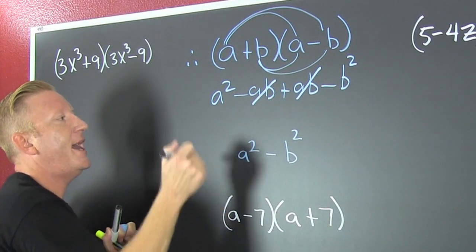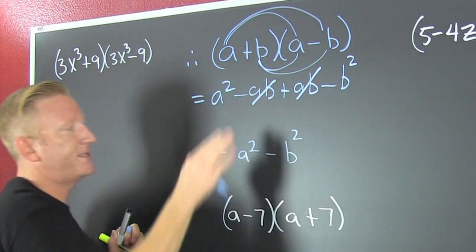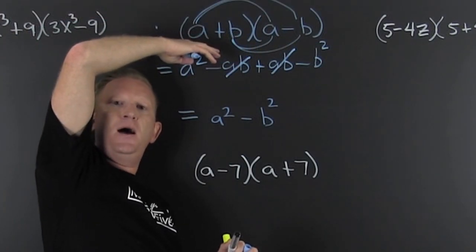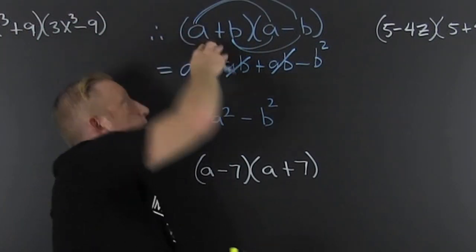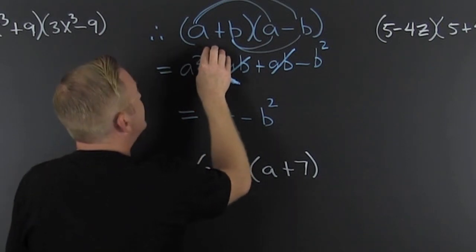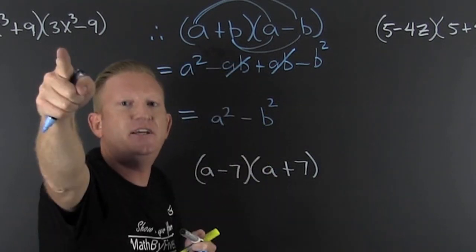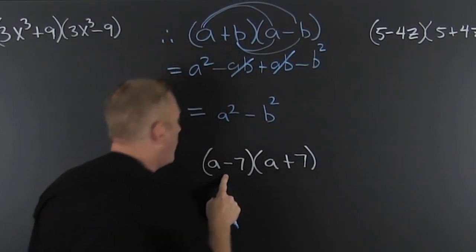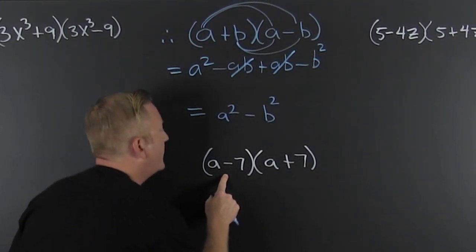And then so when we see a plus b, a minus b, when we see that, that's the difference of squares and we can go right there.